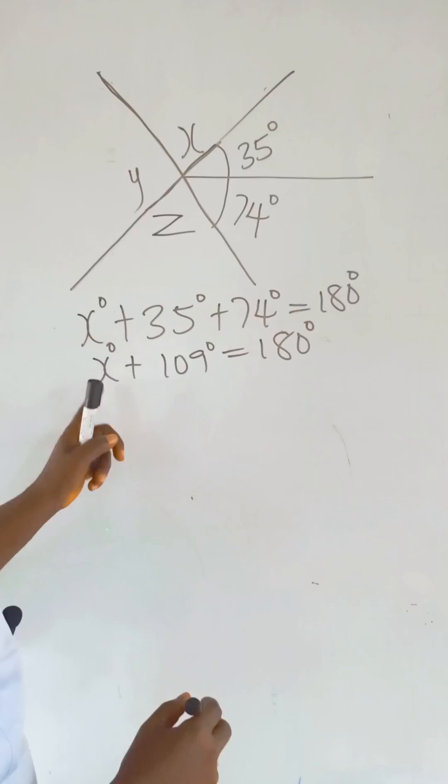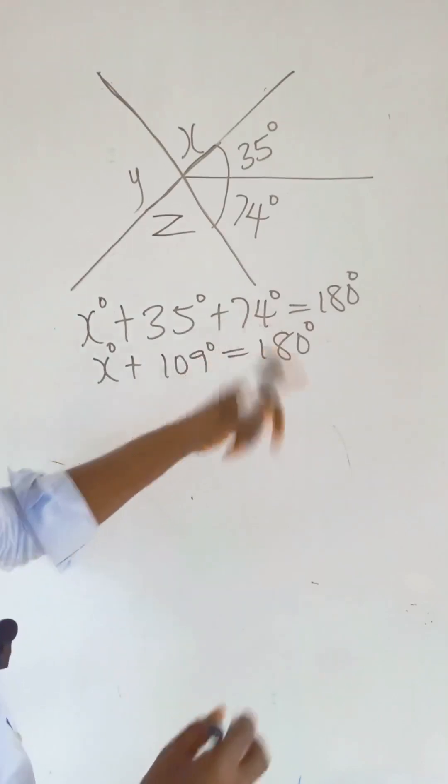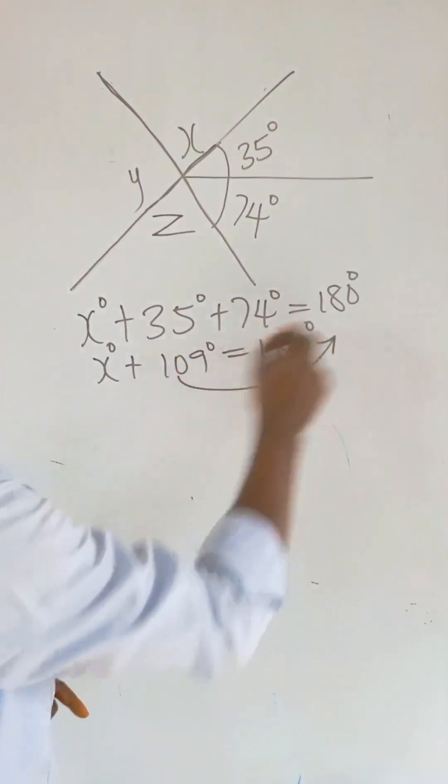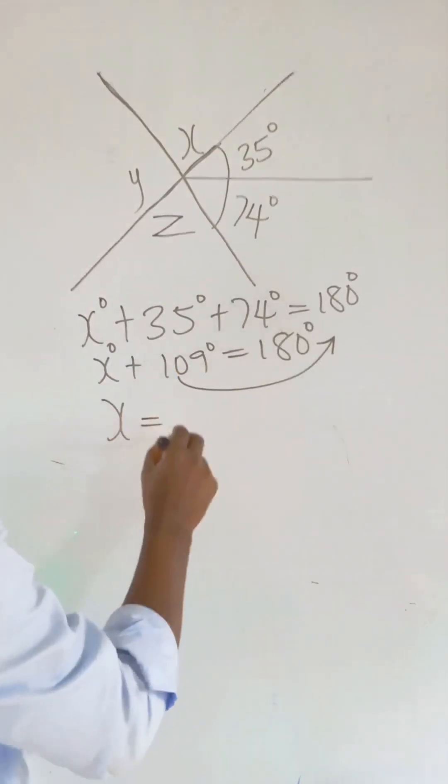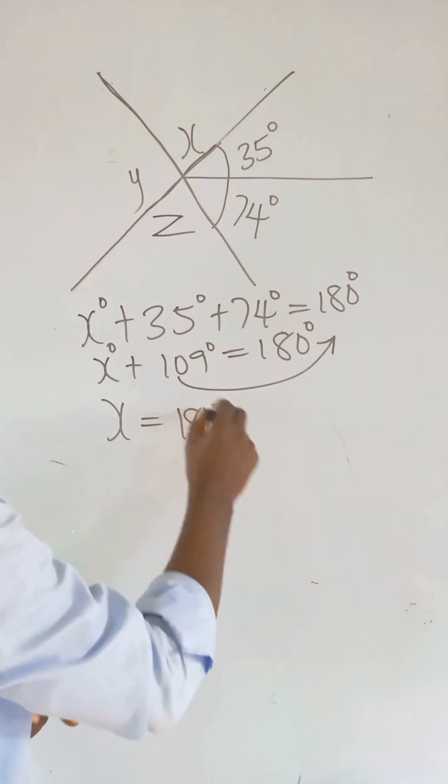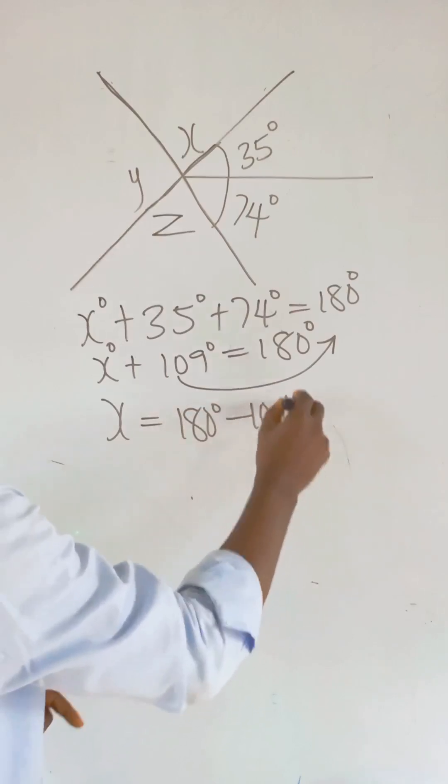Then we collect like terms, we move this to this side. So we have X to be 180 degrees minus 109 degrees.